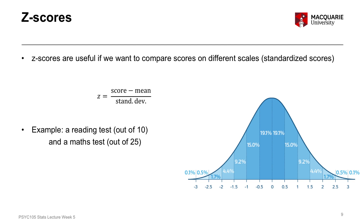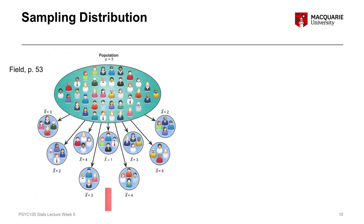The most important takeaway is that if a variable is normally distributed, that gives us a lot of information about how unusual a particular score is. We can compare any score to what we know about the normal distribution and therefore understand how unlikely it is for that score to occur. That leads us on to talk about sampling distribution. We can use the same logic we used for Z scores in research studies — but instead of comparing one individual to a population mean, we compare a sample to a wider population.